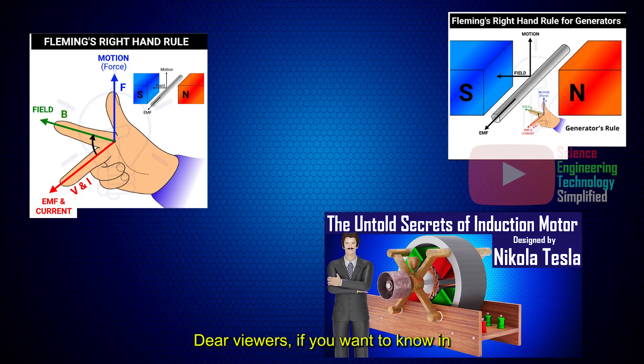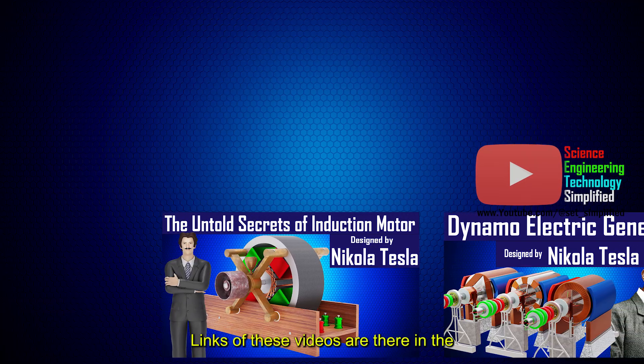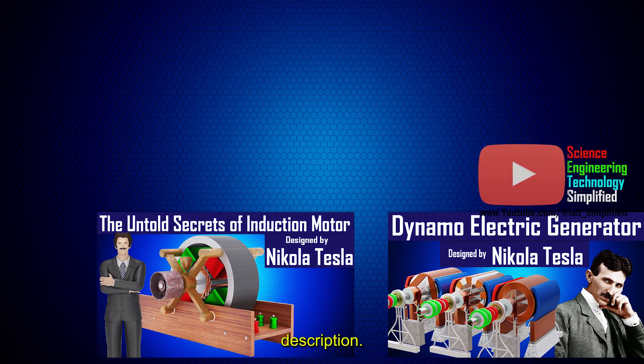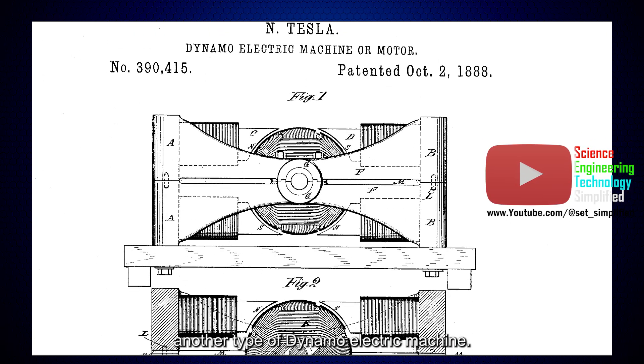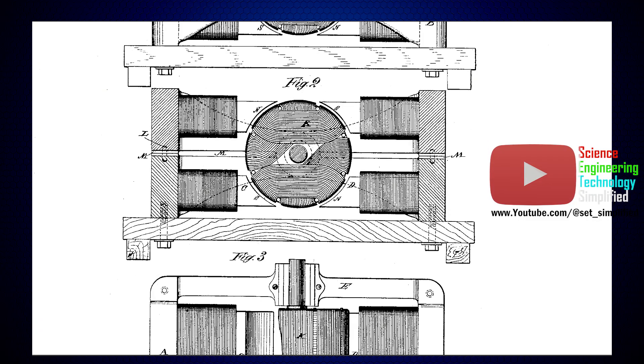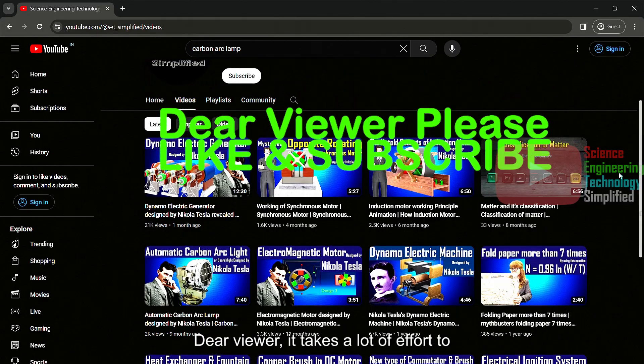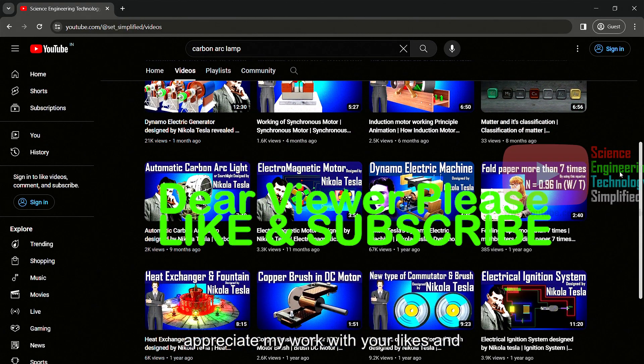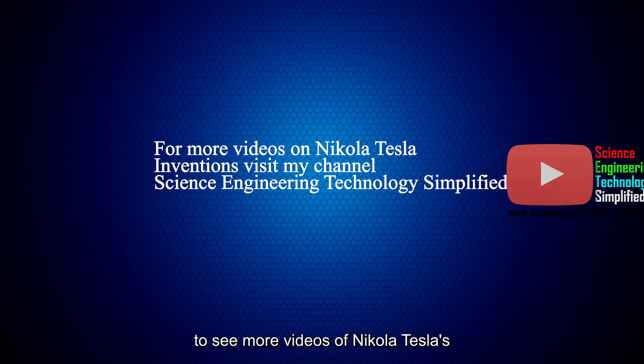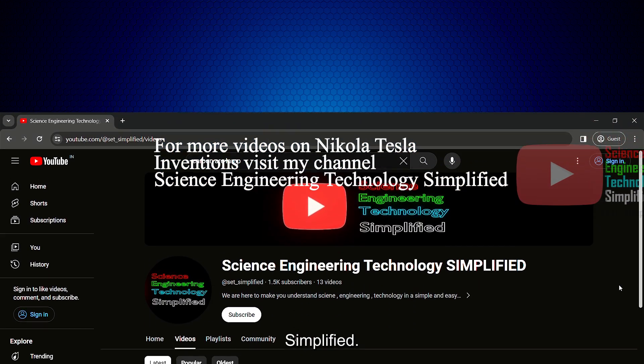Dear viewers, if you want to know in detail how to use Fleming's right-hand rule, then kindly watch these videos. Links of these videos are there in the description. In this way, Nikola Tesla designed this another type of dynamo electric machine. Dear viewer, it takes a lot of effort to make these kind of videos, so please appreciate my work with your likes and subscribe. And dear viewer, if you want to see more videos of Nikola Tesla's invention, then kindly visit my channel, Science, Engineering, Technology, Simplified.